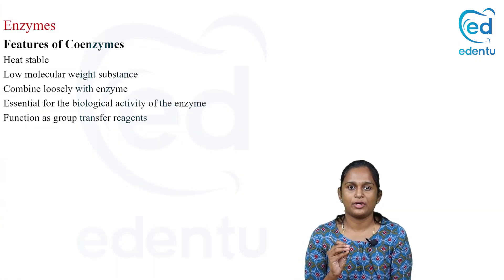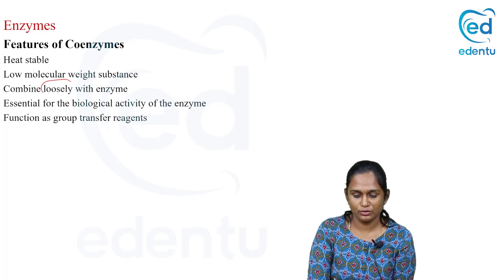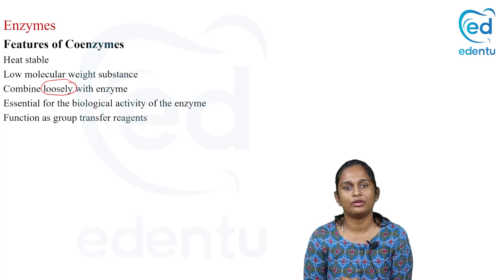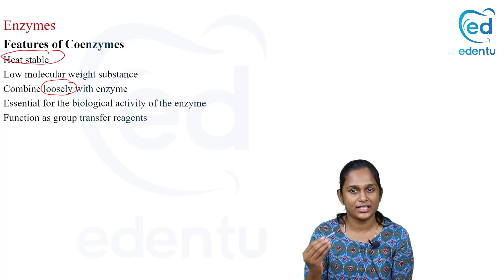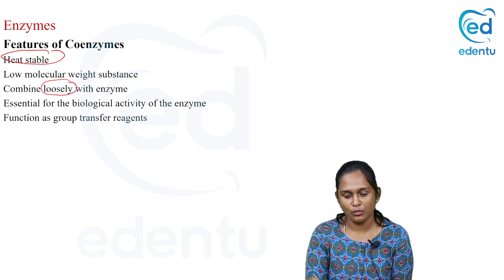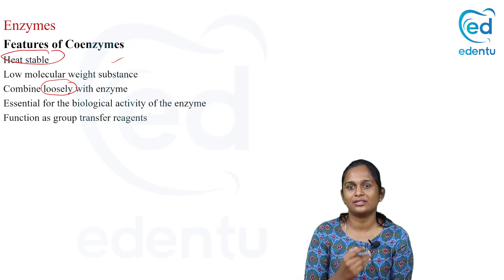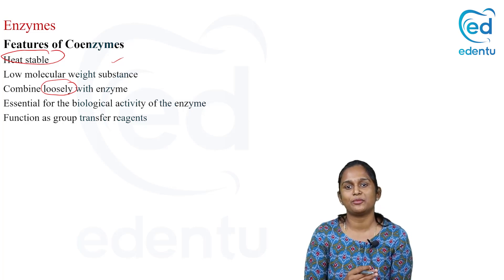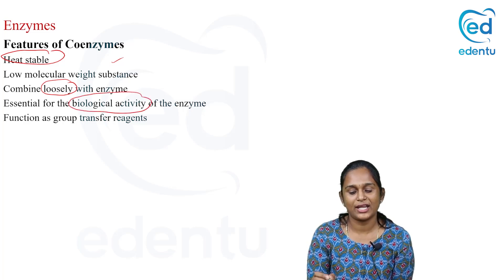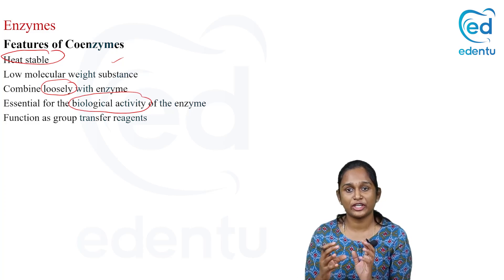What are the features of coenzymes? They are loosely bound to the enzymes. They are very low molecular weight substances and they are heat stable. Coenzymes are essential for the activity of the enzyme — if the enzyme has to perform its action, it should have the coenzyme along with it. So they are required for the biological activity of the enzyme because they act as group transfer agents.